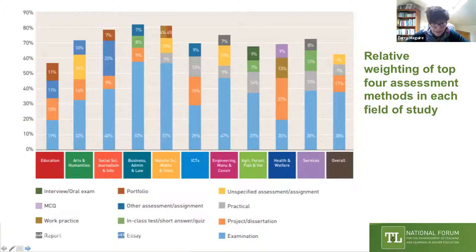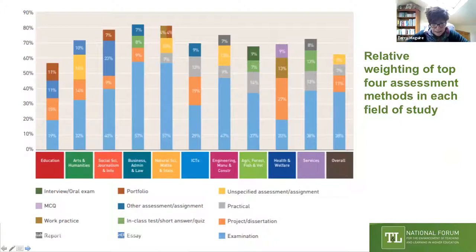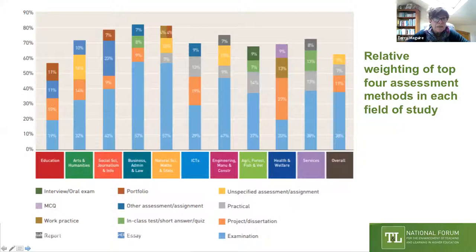Looking at the data by discipline: in Arts, 60% of the modules contained examination and the average weighting was 59%. In Business, 80% of modules contained examinations and the average weighting was 67%. In Engineering, 67% of modules contained examinations with an average weighting of 65%. In Health and Welfare, 43% of modules contained examinations with an average weighting of 63%. So it's very clear that examinations appear across all disciplines, but with different weightings.